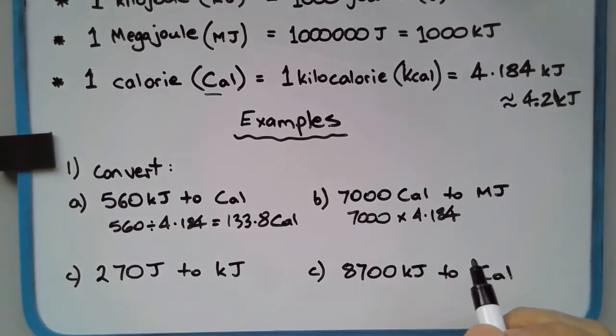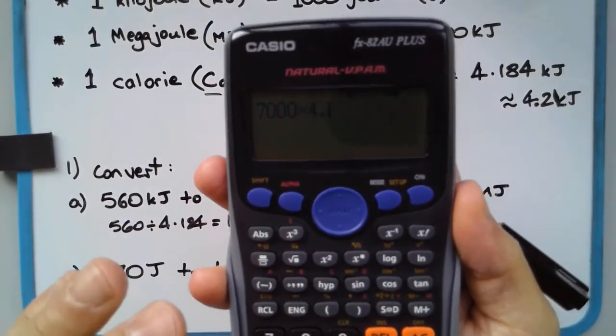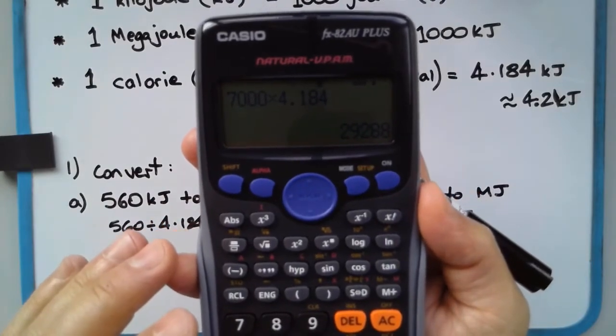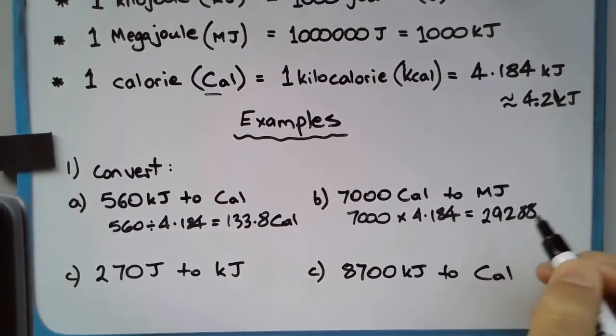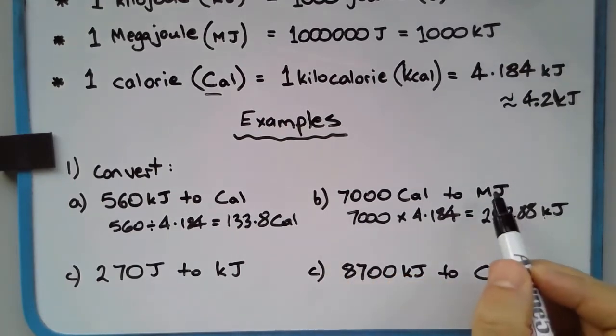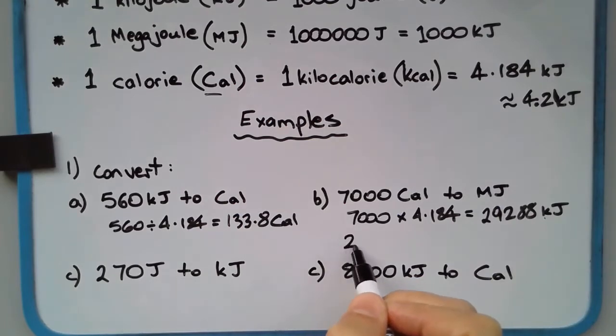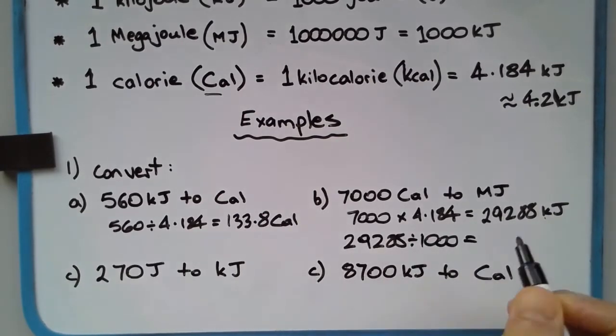7000 times 4.184 equals 29288 kilojoules (lowercase k, capital j). Now kilojoules to megajoules—we're going to divide by a thousand because we're going from a smaller unit to a larger unit. So 29288 divided by a thousand equals 29.288 megajoules.